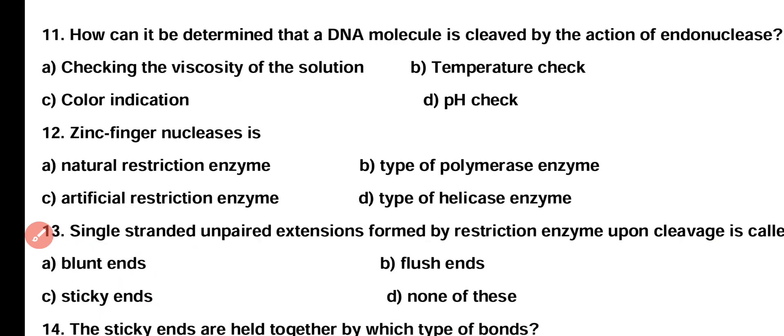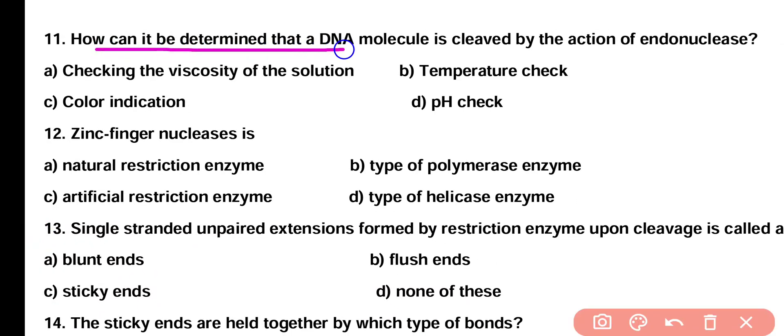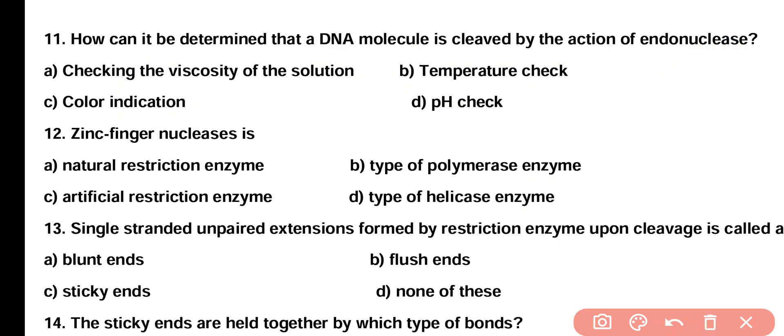Question 11. How can it be determined that a DNA molecule is cleaved by the action of endonuclease? Option A: Checking the viscosity of the solution, Option B: temperature check, Option C: color indication, Option D: pH check. Correct answer is Option A. The viscosity of the solution should be checked; uncleaved DNA viscosity will be more, and cleaved DNA viscosity will be less.